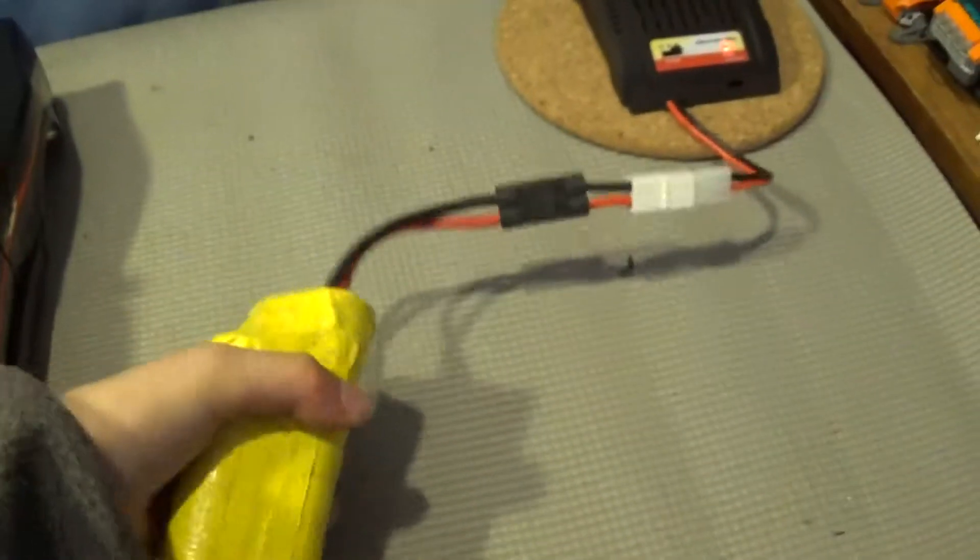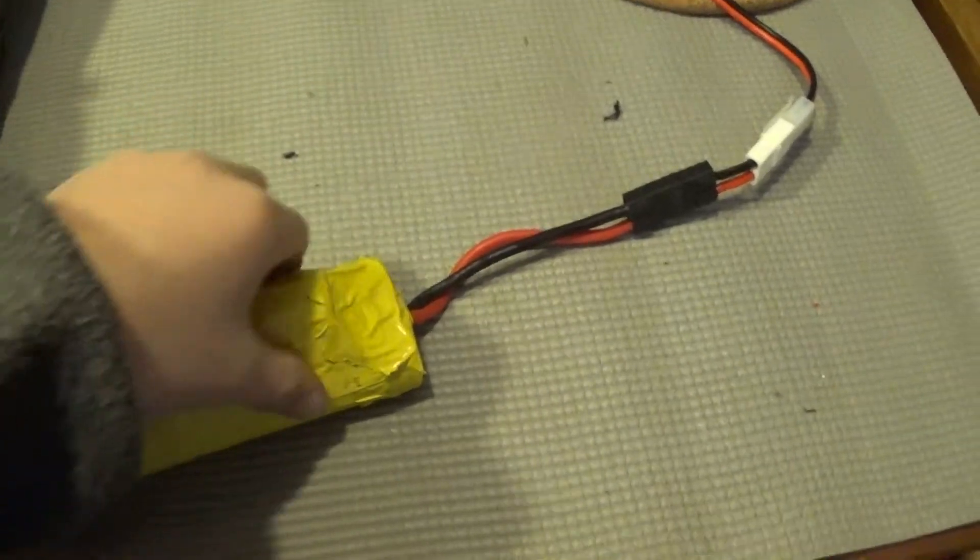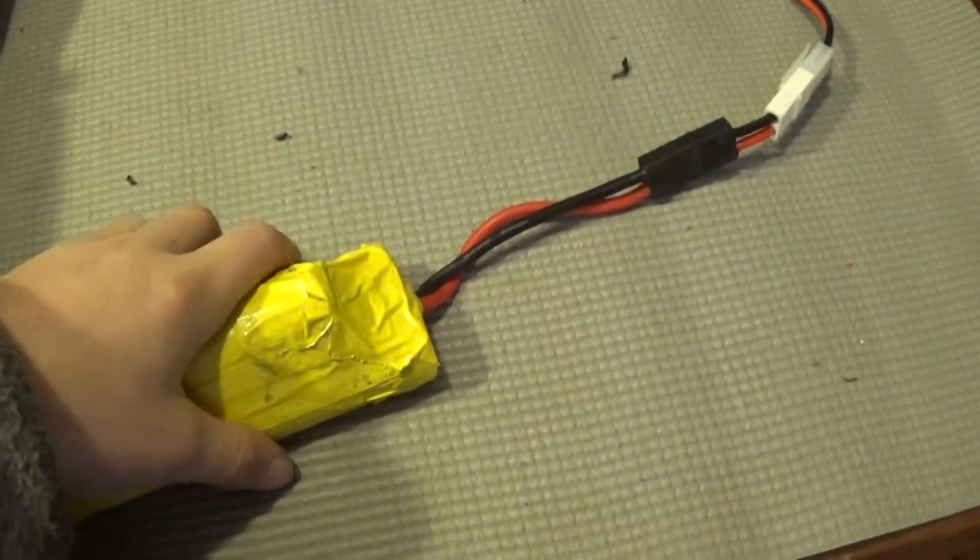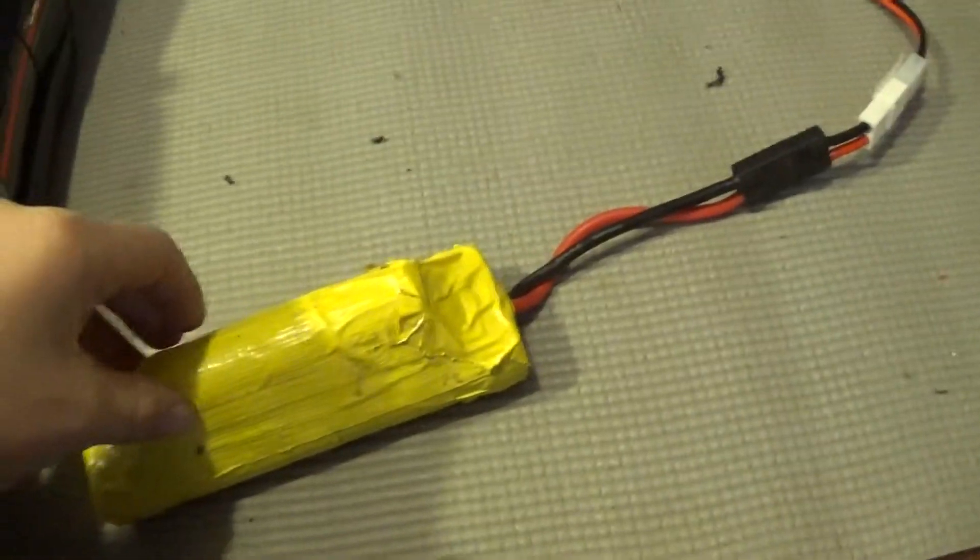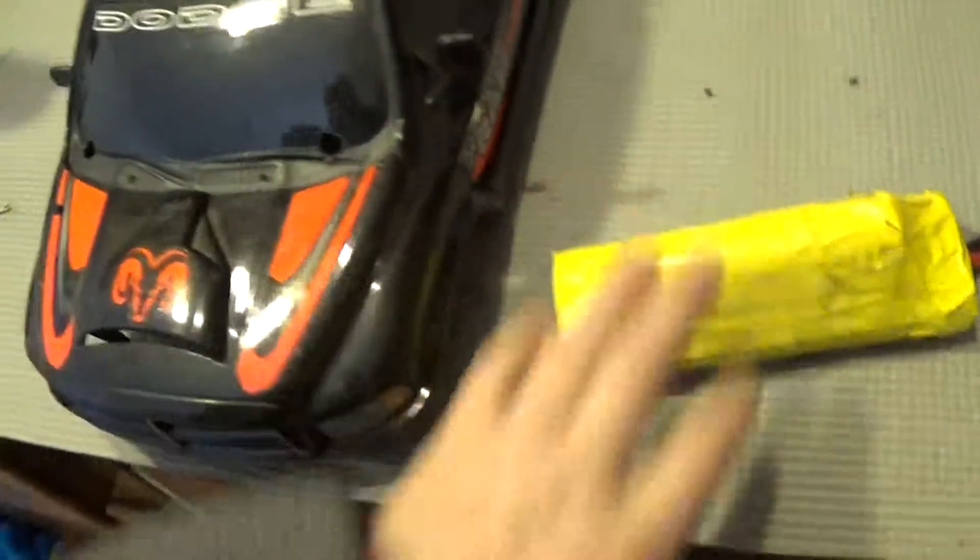I'm using, it's wrapped up in duct tape, because I've already destroyed it, basically. The cover for it or whatever. I'm using a Venom 9.6 volt 8 cell hump pack, nickel metal hydride.